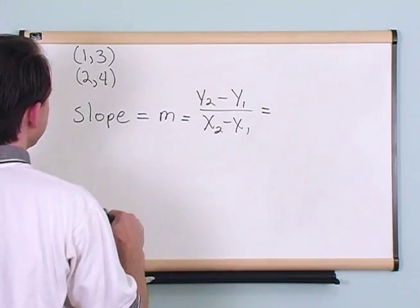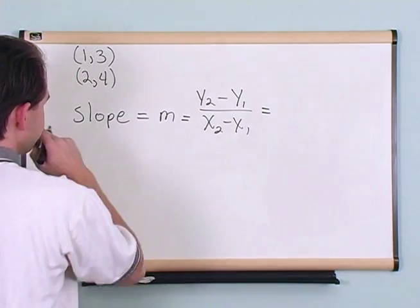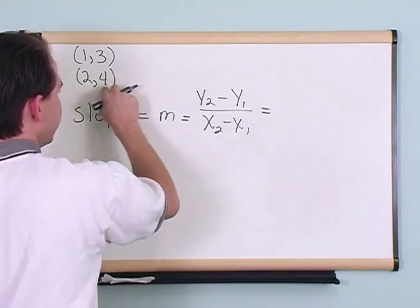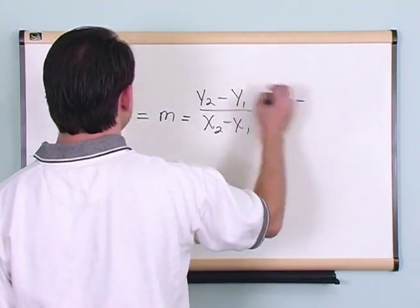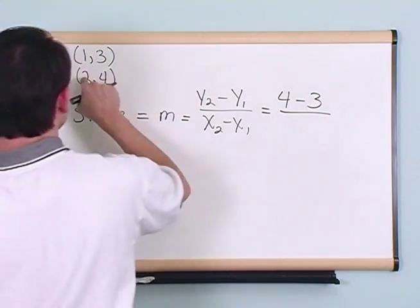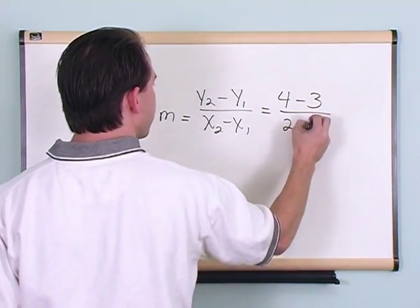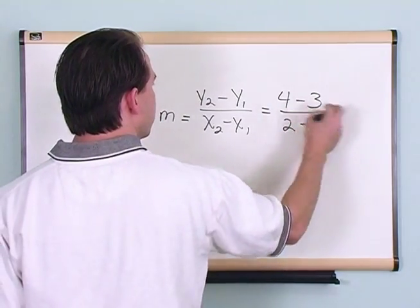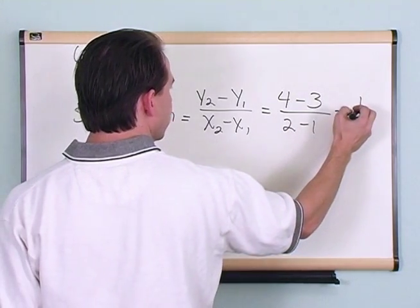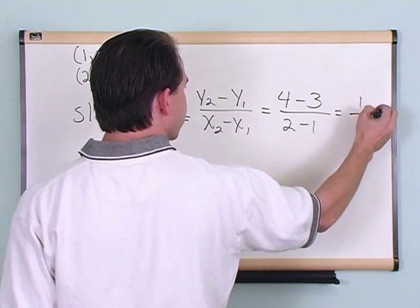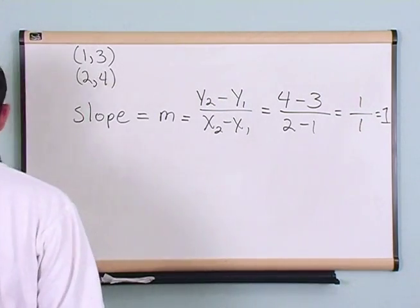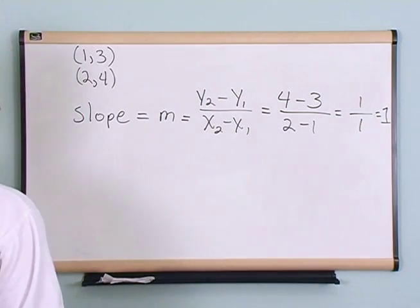So let's do that. Taking y2 minus y1: 4 minus 3, over x2 minus x1: 2 minus 1. That gives us 1 over 1. So the slope of this line is 1.